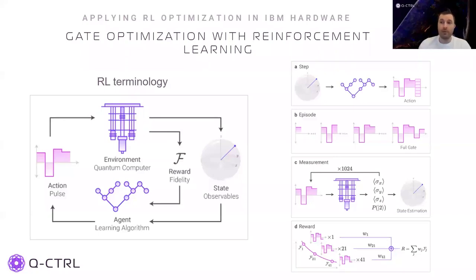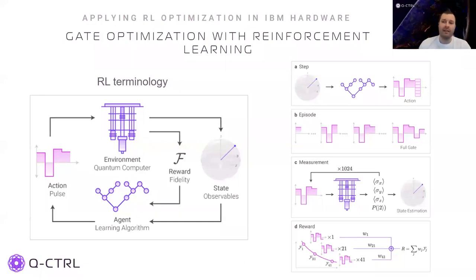A sequence of steps that form a full gate is an episode. Once we have a full episode, we want to evaluate its performance. We run it in full and collect measurements to estimate the state of the system. To account for state preparation and measurement errors and to uniquely define the gate, we repeat the full gate a different number of times and calculate the fidelity with respect to the ideal target state in each case. The reward assigned to a specific gate implementation is a function of these fidelities, and this is the quantity we wish to maximize.